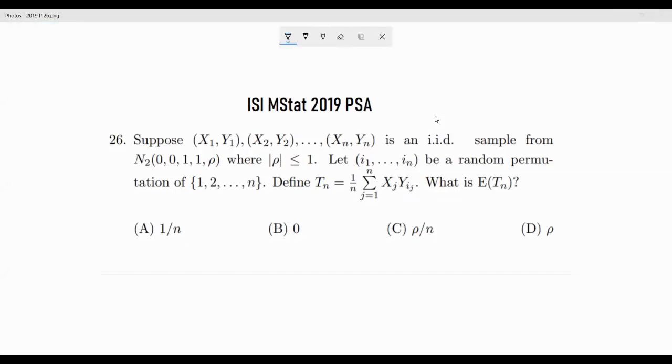So X_i, Y_i are IID sample from N_2(0,0,1,1,ρ). That means both the means are 0 of X and Y, and the variance are 1 and 1, and ρ is the corresponding correlation.